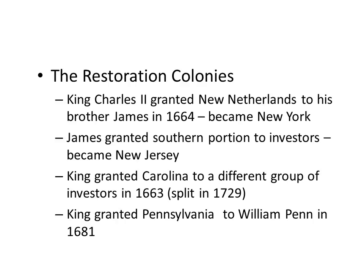First, he's going to grant the New Netherlands colony, which had recently been conquered from the Dutch, to his brother James in 1664. His brother James, who's the Duke of York, goes ahead and names it after himself and calls the colony New York. He's going to give a piece of that colony to some investors, and they're going to call it New Jersey. The king is also going to grant Carolina to a different group of investors in 1663.